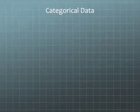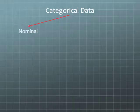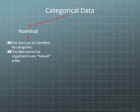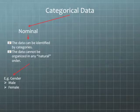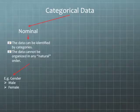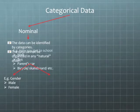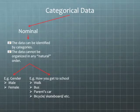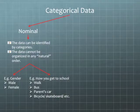Categorical data is any data that can be organized into categories. Categorical data can be nominal. Nominal data is data that can be identified by categories, but the data cannot be organized in any natural order. Gender is an example of nominal data. The categories are either male or female, but there's no natural order for us to organize the data — there's no natural way to list either male first or female first. Another example might be how you get to school: walking, on the bus, taking a ride in your parent's car, by bicycle, skateboard, or some other method. However, there's no natural order for us to list those ways that you get to school.